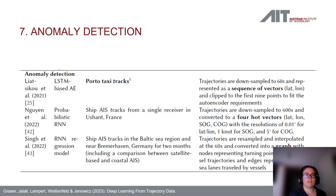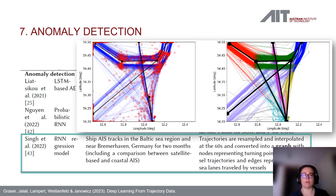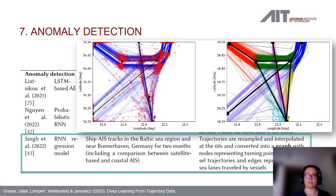Use case seven is anomaly detection. Here, trajectories are turned into a graph: whenever a trajectory changes direction, that location becomes a graph node, and connections between nodes are modeled as edges. This graph representation is used in an RNN to detect anomalies in trajectories.